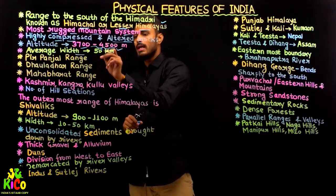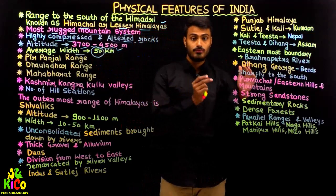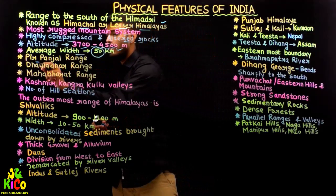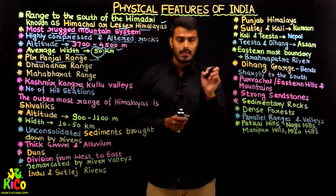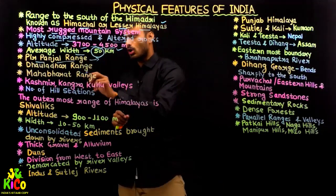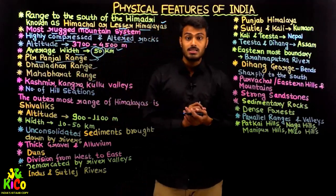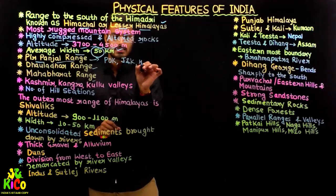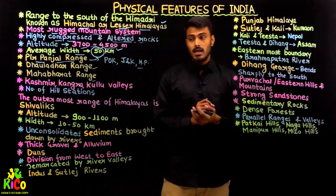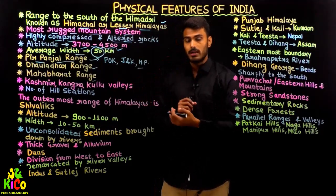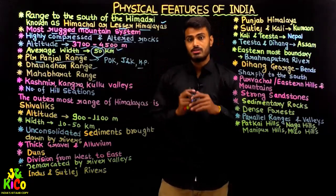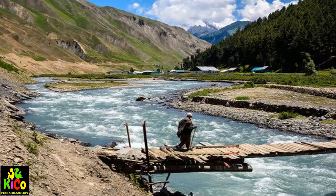The average width of this range is approximately 50 kilometers. It has three prominent sub-ranges: first is the Pir Panjal range, which is the longest range overall, covering Pakistan-occupied Kashmir, Jammu and Kashmir, and Himachal Pradesh. It contains passes like Banihal Pass and Rohtang Pass. The entire Kashmir Valley also lies in this range.